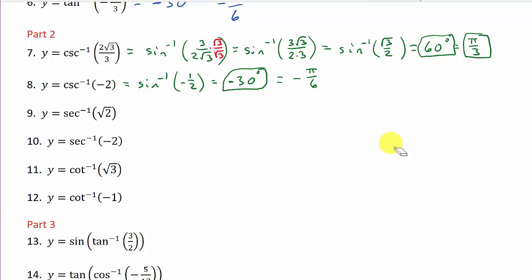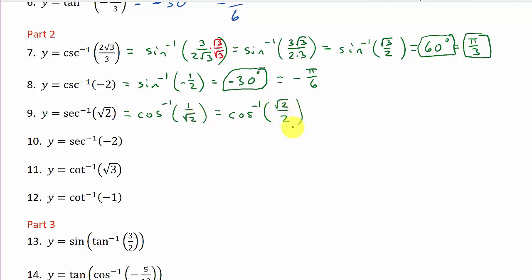For inverse secant, remember secant and cosine are reciprocals. So inverse secant of √2 becomes inverse cosine of 1/√2. Rationalizing the denominator — multiplying numerator and denominator by √2/√2 — gives inverse cosine of √2/2. The cosine of what is √2/2? That's 45 degrees, or π/4 in radians.